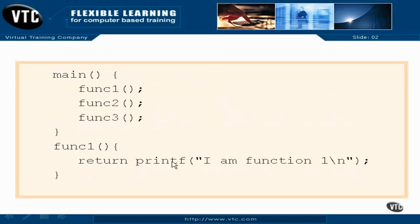Here's a small program. Here's our main — open brace, close brace — that's a function definition for main. All we do is call three separate functions one after the other. Notice a call is different: here we have func1 with open and close parentheses and a semicolon, making it a statement — we're calling or executing function one. Processing comes down to func1 wherever it's defined. Func1 is defined below with open and close braces. Here's the return statement — it sends back to the caller the value after it. Printf will return the number of characters it outputs.